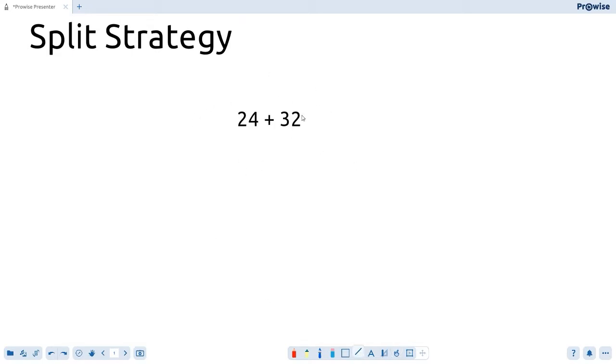Basically what you're doing with the split strategy is you're adding two or more numbers and splitting them up into their place value units. So here we've got 24 consisting of 20 and 4, and 32 with 30 and 2.